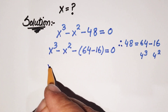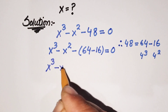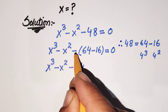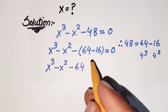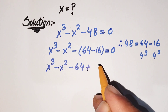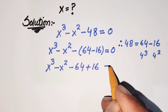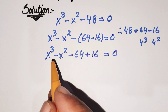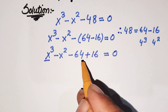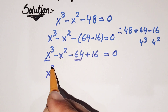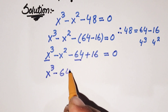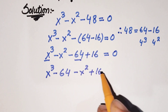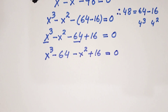We rewrite the expression as x cubed minus x squared minus 64, then multiplying the negative sign into the parenthesis gives plus 16, equal to 0. Grouping: x cubed minus 64, then minus x squared plus 16, which is equal to 0.